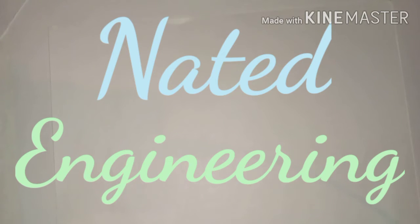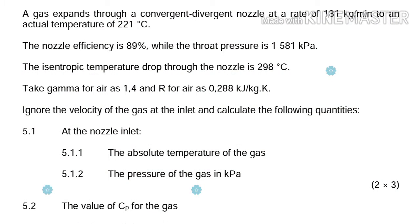Hello everyone, welcome back to Naited Engineering. Today we are doing yet another question on nozzles, power machines and sticks. The exercise is taken from a question paper written in August 2019. It's question number 5 and reads as follows: A gas expands through a convergent-divergent nozzle at a rate of 181 kg per minute to an actual temperature of 221 degrees Celsius. The nozzle efficiency is 89% while the drop pressure is 1581 kPa. The isentropic temperature drop through the nozzle is 298 degrees Celsius. Take gamma for air as 1.4 and R for air as 0.288 kJ per kg Kelvin. Ignore the velocity of the gas at the inlet.